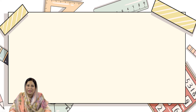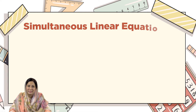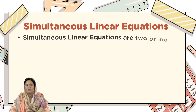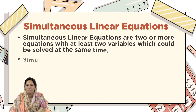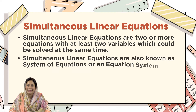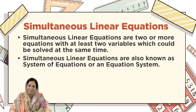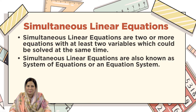Now, what are simultaneous linear equations? Simultaneous linear equations are two or more equations with at least two variables which can be solved at the same time. Simultaneous linear equations are also known as a system of equations or an equation system.